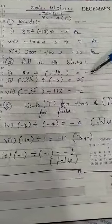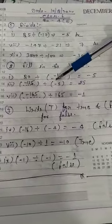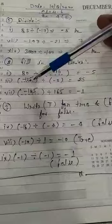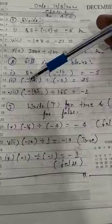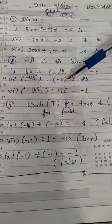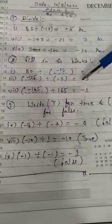Phir minus 5 se hame kis number ko divide karayenge ki 25 answer me aana chahiye. So minus 5 se hame minus 125 divide karayenge. 5 se hame 125 ko divide karayenge to 25 answer aayega. Minus minus plus ho jayega, so plus 25.